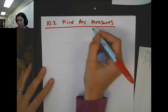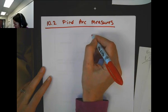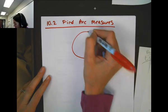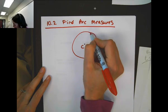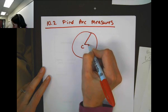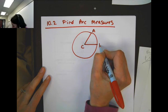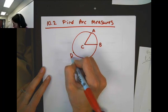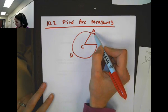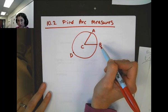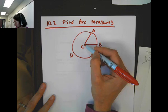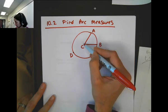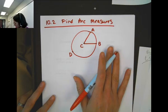Let's start with some vocabulary on arcs of circles. We'll start with a circle, center C, and put a couple points here. A central angle of a circle has the center as the vertex of the angle.